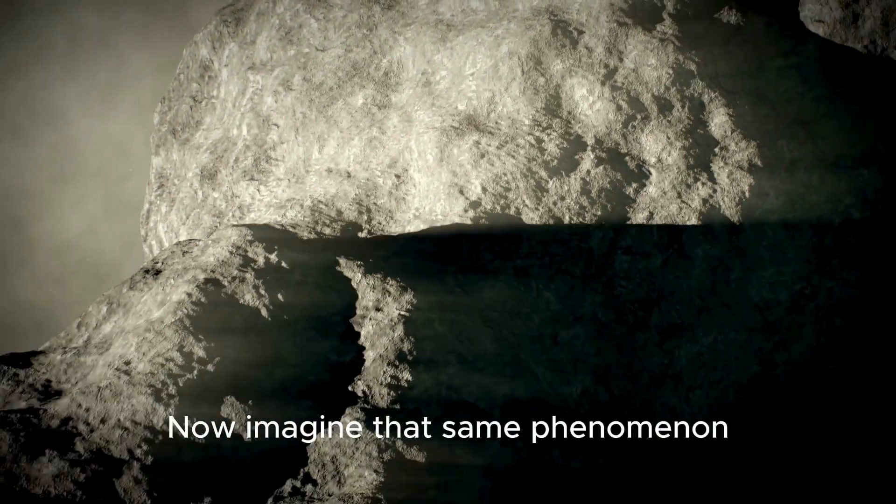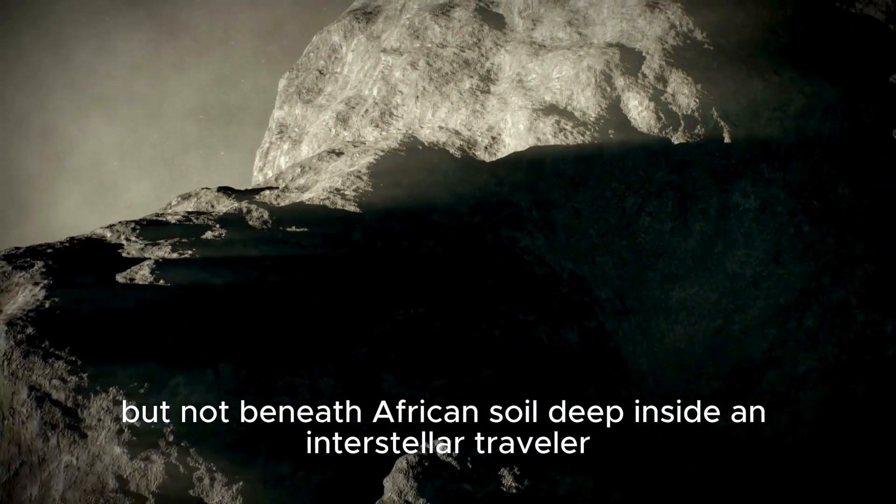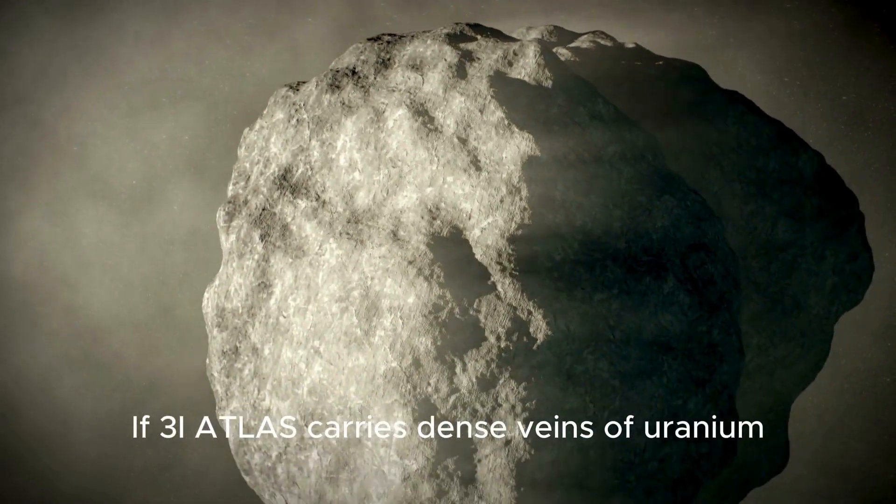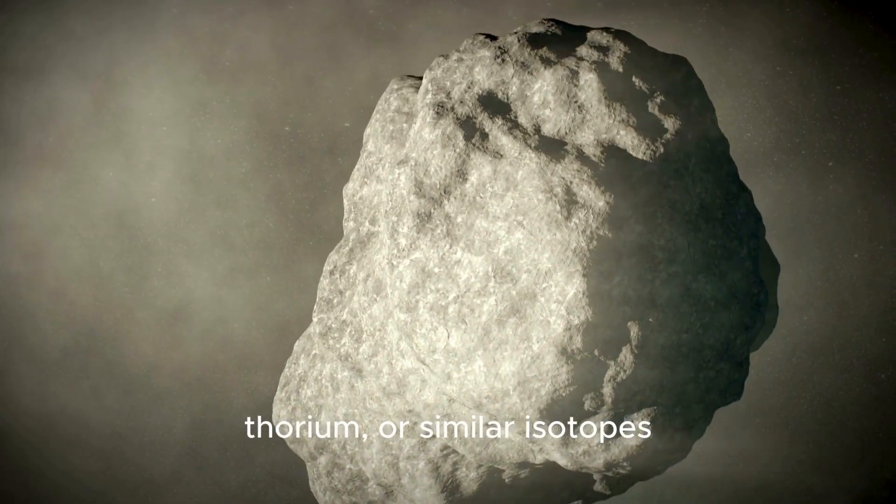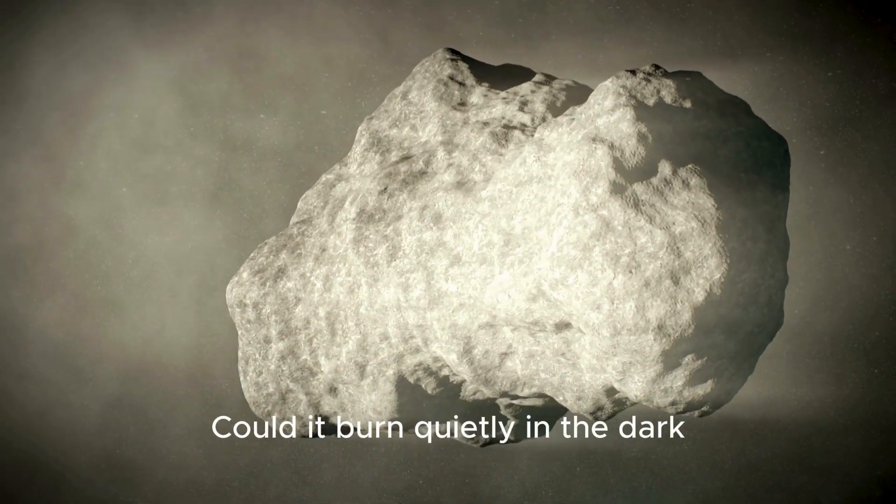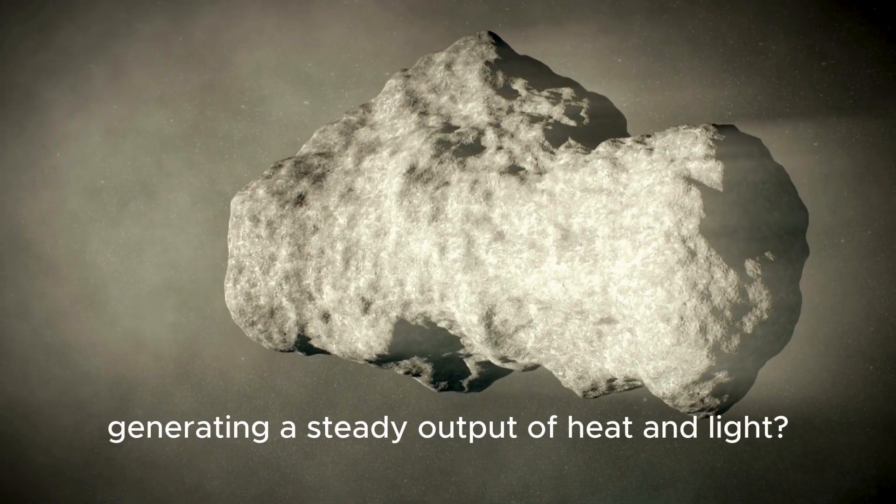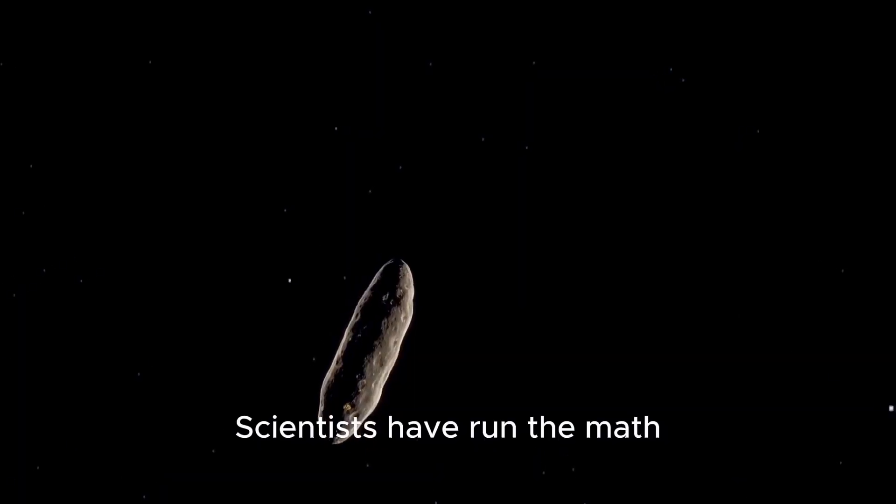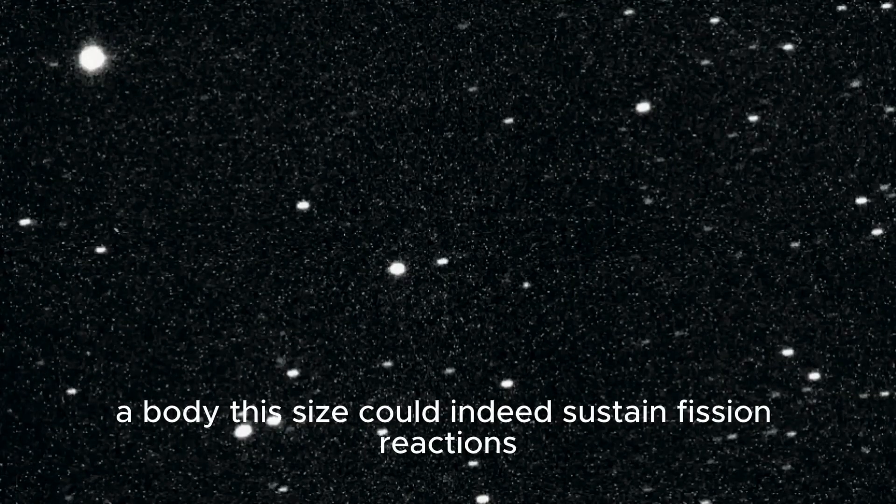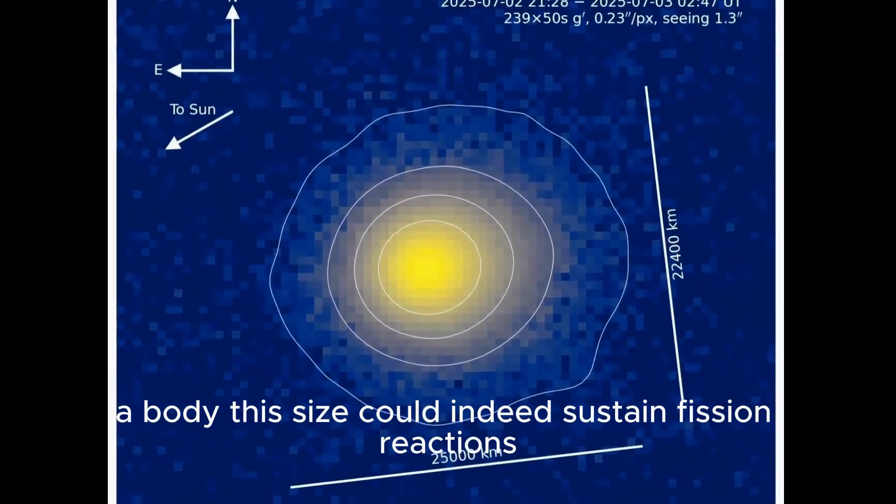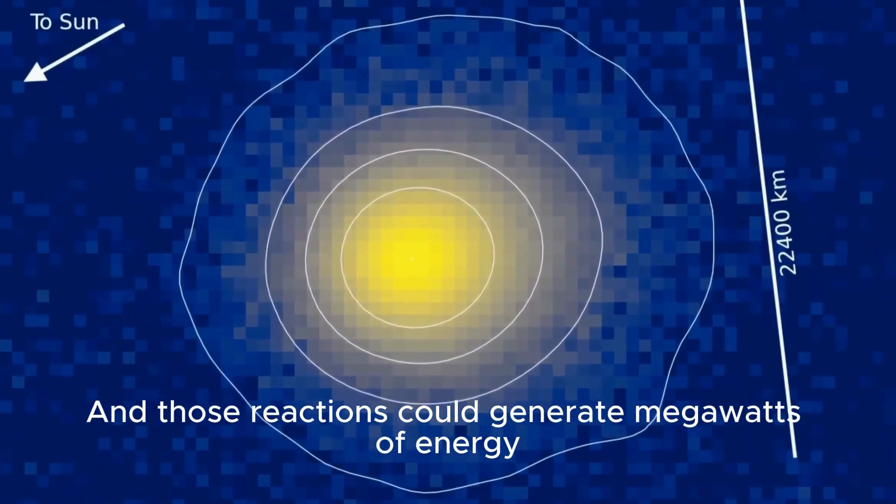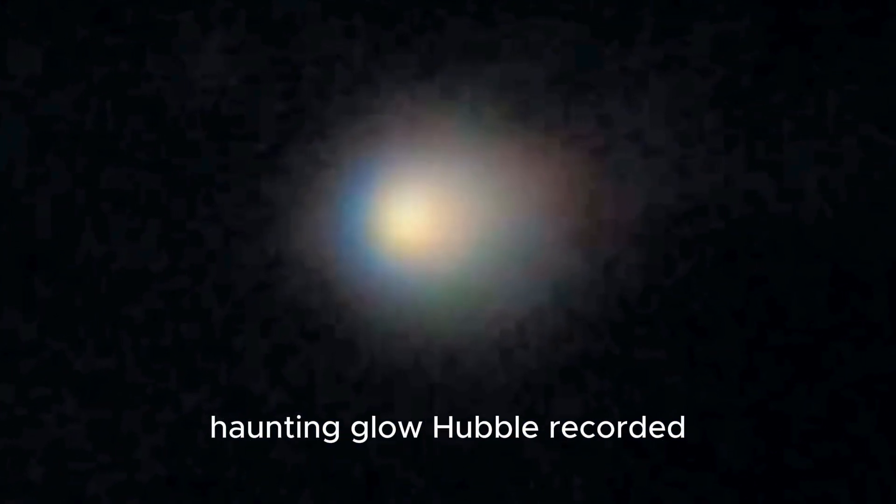Now imagine that same phenomenon, but not beneath African soil, deep inside an interstellar traveler. If 3i Atlas carries dense veins of uranium, thorium, or similar isotopes, could the same self-sustaining chain reaction occur? Could it burn quietly in the dark, generating a steady output of heat and light? Scientists have run the math. If even a few percent of its interior is uranium-rich, a body this size could indeed sustain fission reactions. And those reactions could generate megawatts of energy. Enough to explain the steady, haunting glow Hubble recorded.